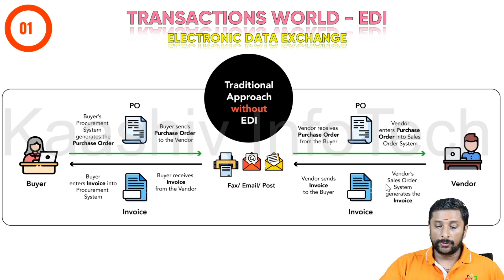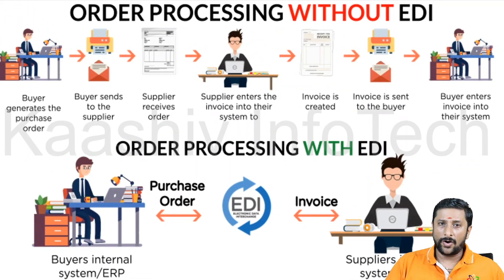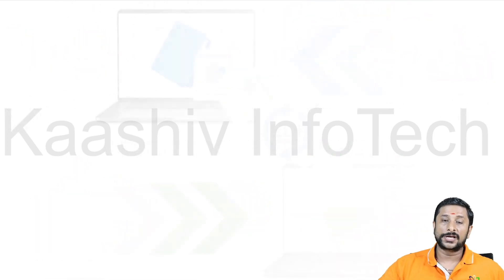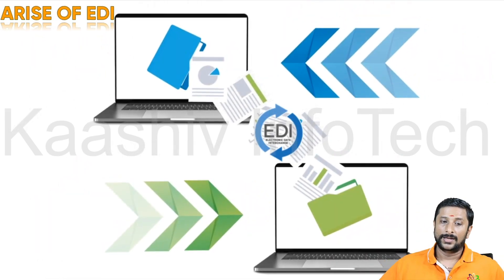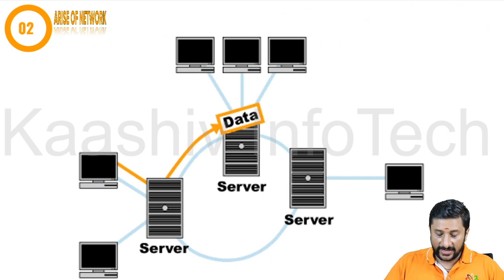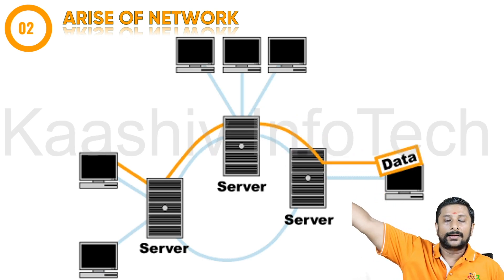The origins of IoT start with electronic data interchange. In the initial world, a buyer wanting to purchase would create a purchase order sent via email or post. The purchase order would reach the vendor, he'd prepare products, raise an invoice, the buyer pays, and delivery happens — a huge process. But now I go to Amazon, give my credit card, pay via Google Pay, and it's done. Electronic data interchange made the system very simple — direct communication between buyer and supplier automatically.